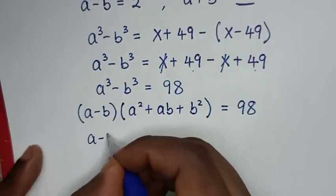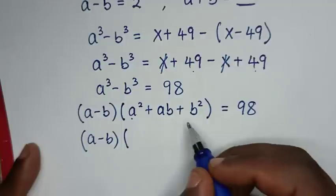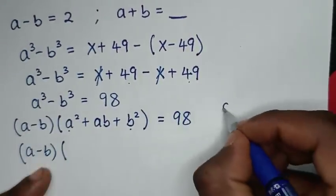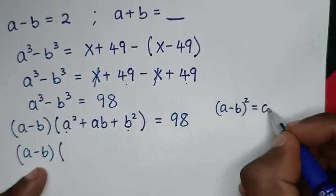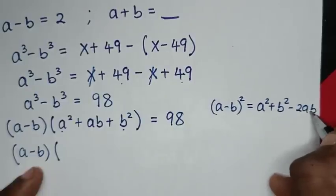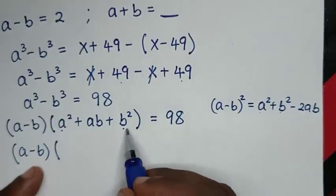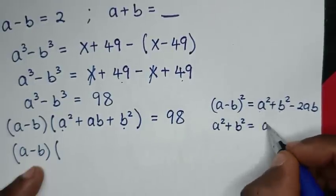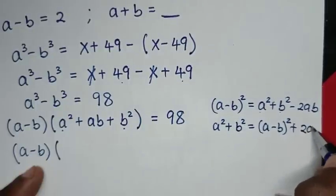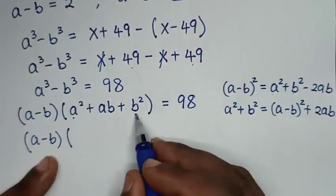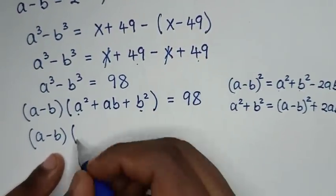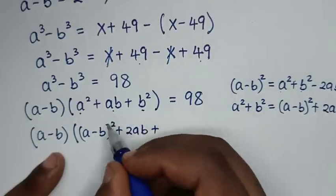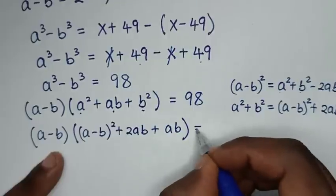From the expansion rule, a squared plus b squared equals (a minus b) squared minus 2ab. Rearranging, a squared plus b squared equals (a minus b) squared plus 2ab. Substituting this into the expression gives (a minus b) times [(a minus b) squared plus 2ab plus ab] equals 98.